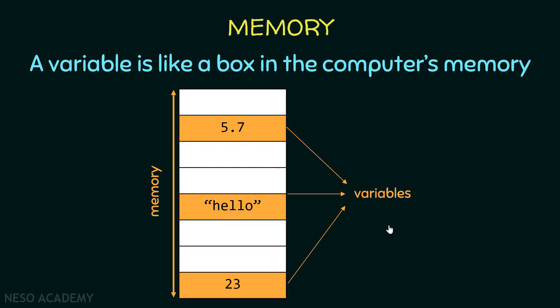Each variable has an address. For example, suppose that 100 is the address of this variable, 150 is the address of this one, and 200 is the address of this one. Each variable has a unique address in the memory, and this address specifies where this variable is located.